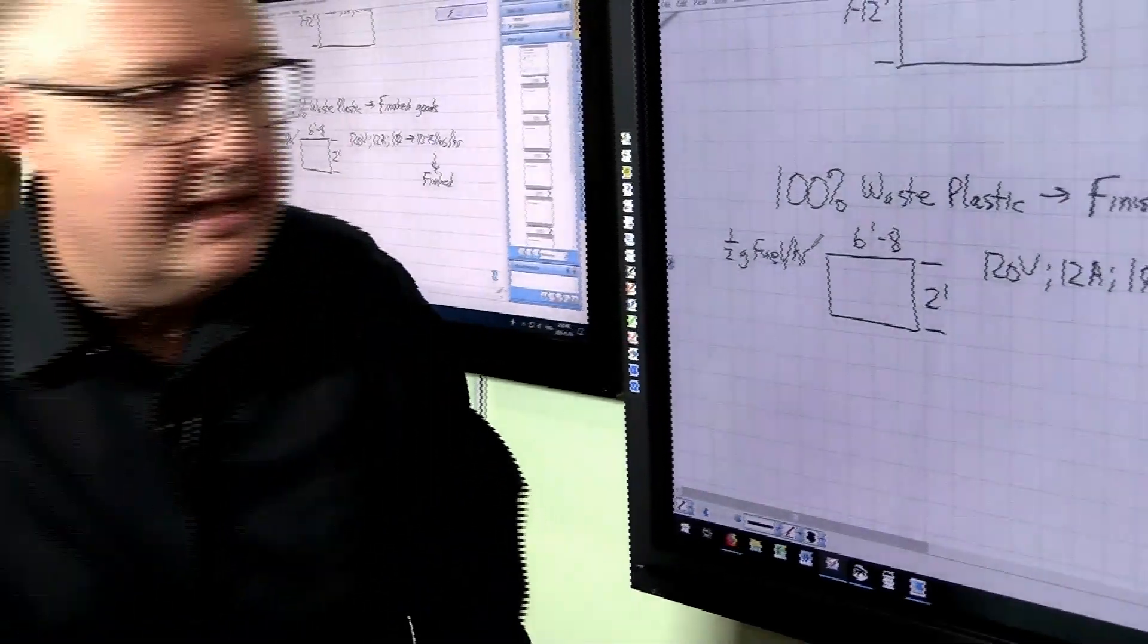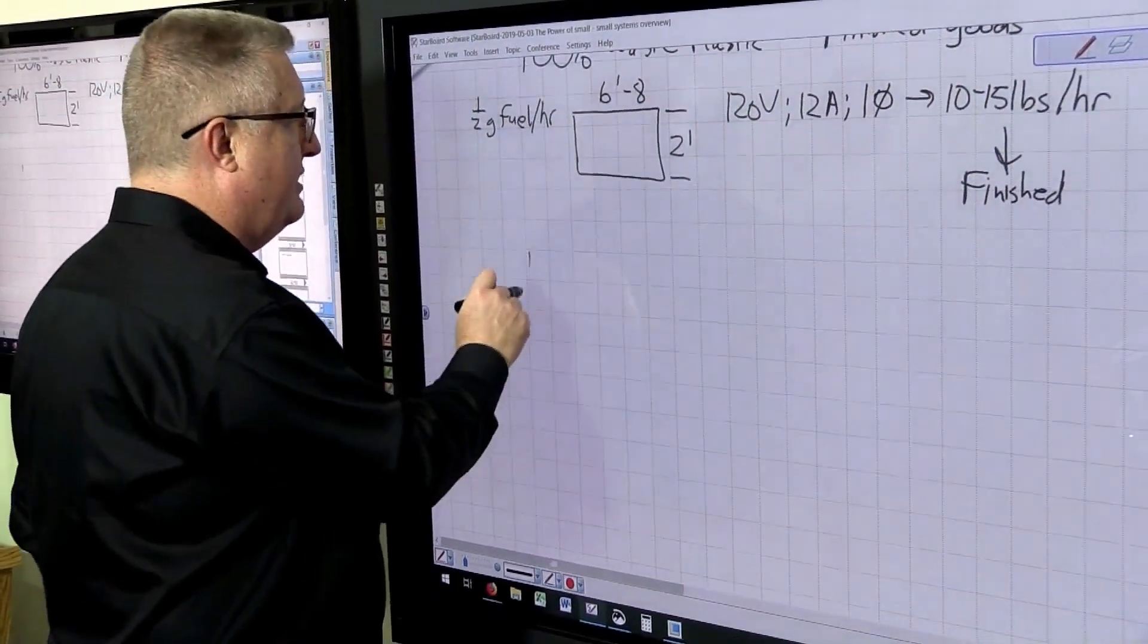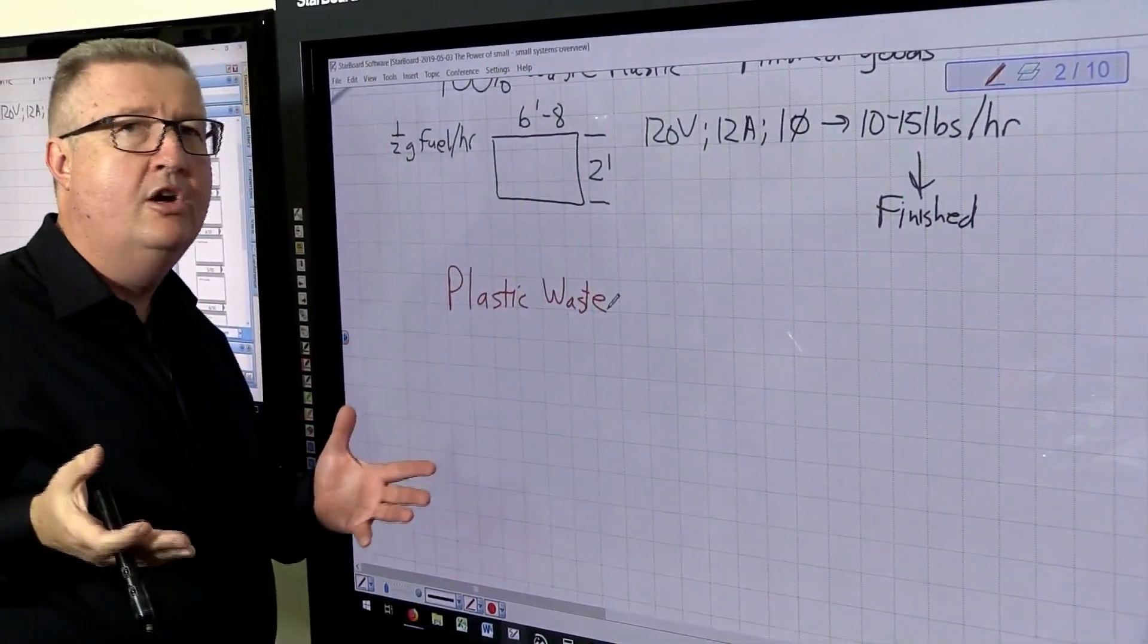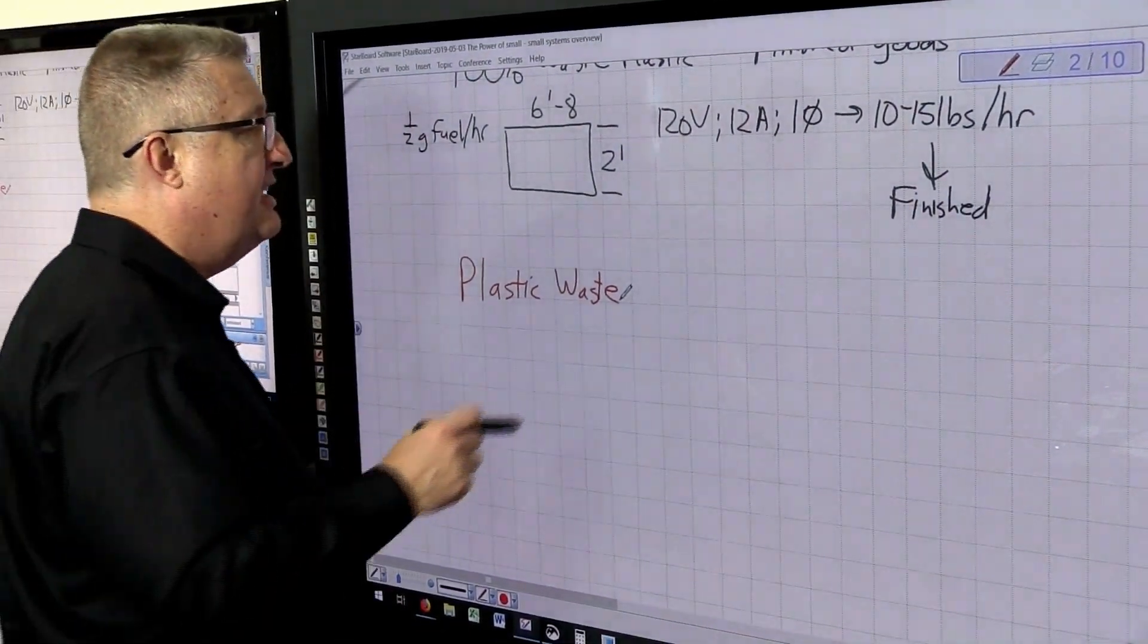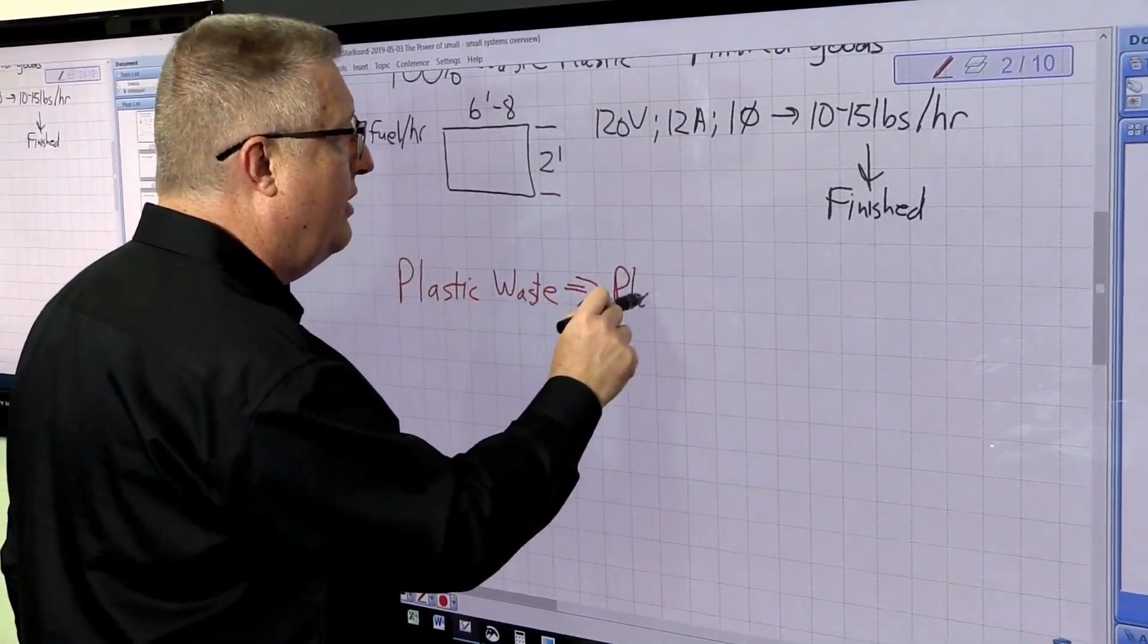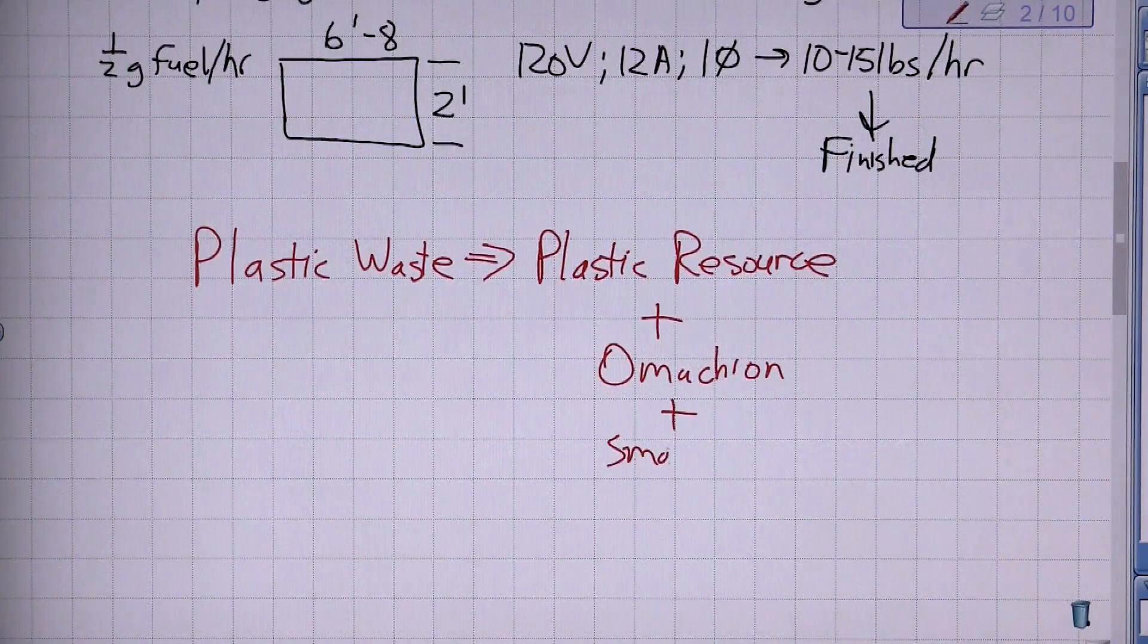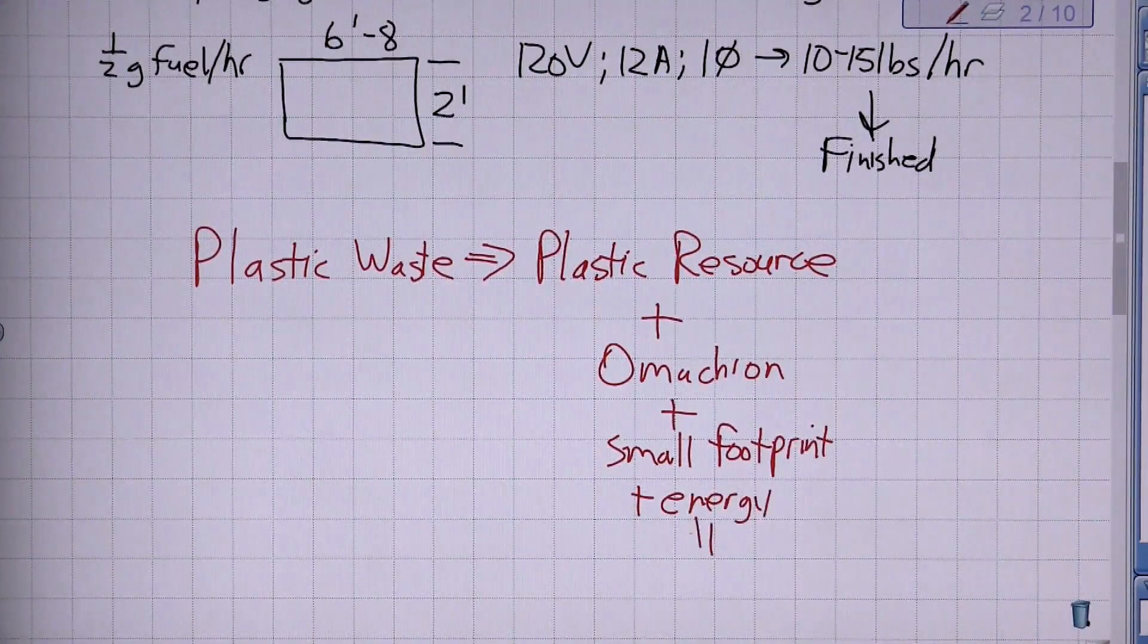So you see, if we take plastic waste and reclassify it, so plastic waste, which was used just one time for packaging or for use for a product that now broke and has been discarded. If we take plastic waste and rethink it, instead now it is a plastic resource. And if you add Omicron to it and a small footprint and a modest amount of energy, you now end up with useful goods.